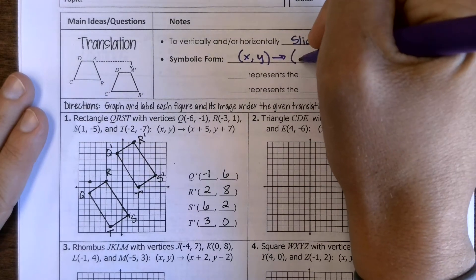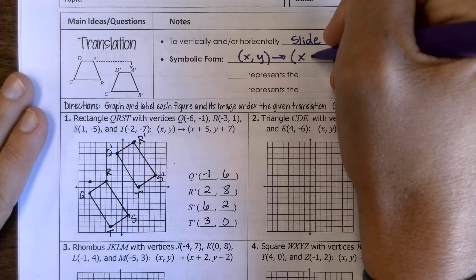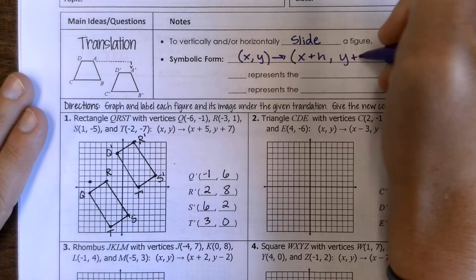are going to be changed in this way and they'll have an x plus or minus h, we'll just say plus, and a y plus k.